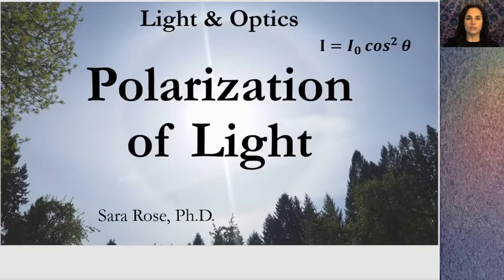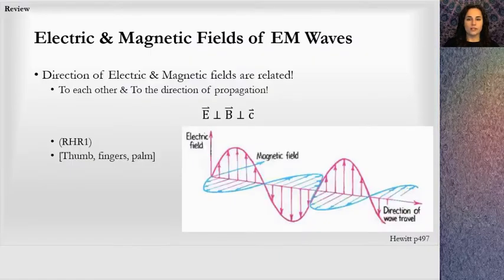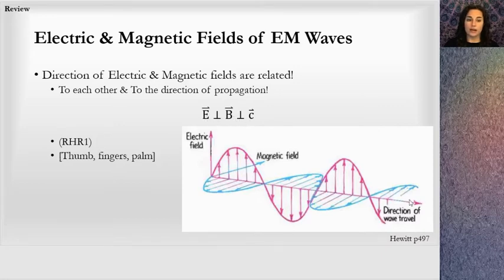This is a lesson on the polarization of light in a light and optics unit. In a prior lesson, I talked about the electric and magnetic fields of an electromagnetic wave — how there is a magnetic field and an electric field, and that these are perpendicular to each other as well as the direction of light.